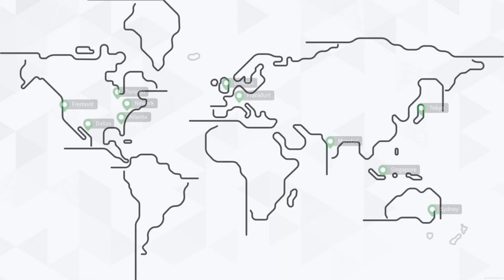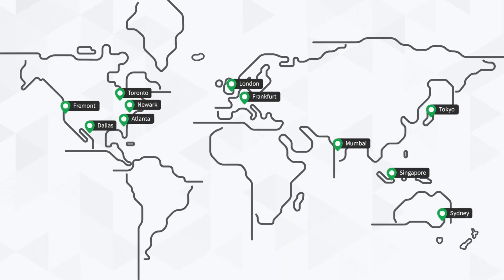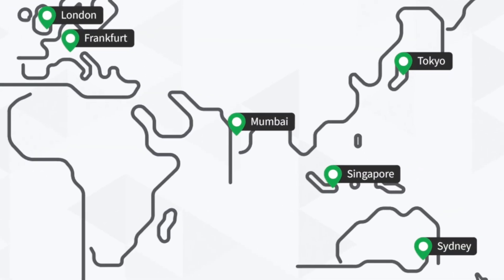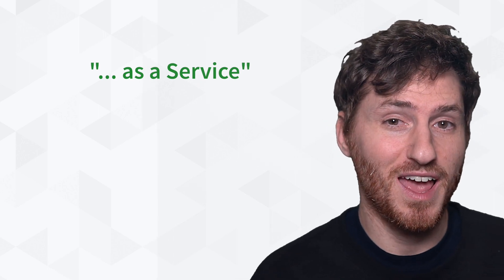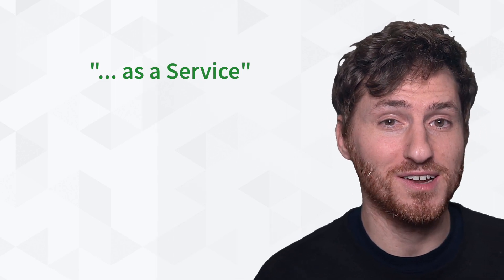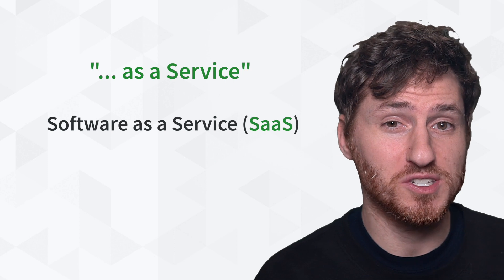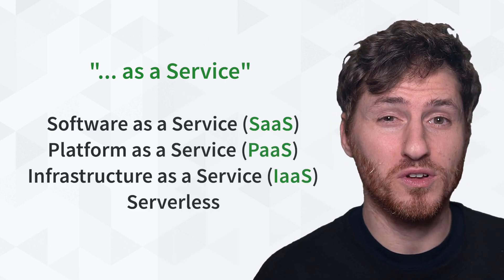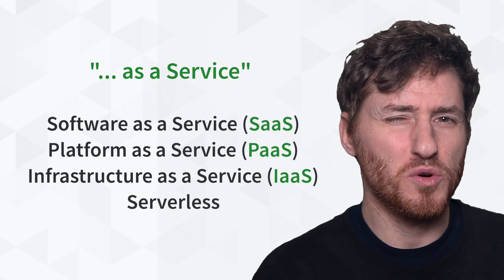Data centers are equipped with some of the top computer hardware. Node has data centers all over the world. Some companies have more reach, and some have less. Cloud computing companies can be broken into three categories, each ending with 'as a service,' and it depends on how much you want to manage. You have Software as a Service, Platform as a Service, and Infrastructure as a Service. There's a fourth one called serverless, but that's over the scope of this video.